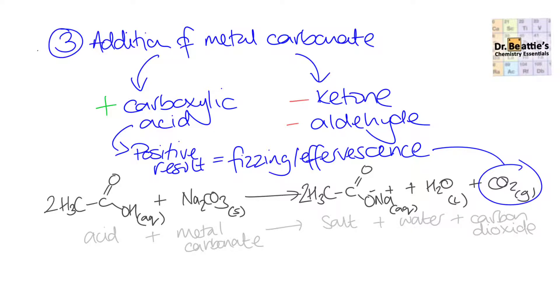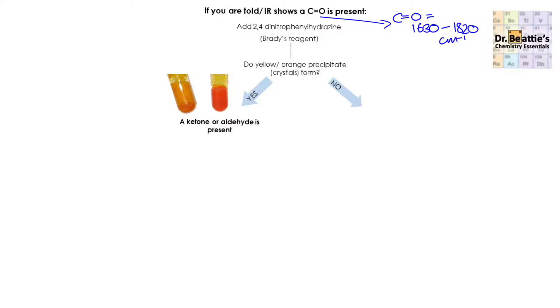That concludes our three different tests for carbonyl — C=O-containing compounds. To put these three tests in a logical order: if you're told in the question stem that you've got a carbonyl, or given information like an infrared spectrum showing a C=O present, you can distinguish exactly what carbonyl you have by doing a series of tests. First, add Brady's reagent — then ask: do yellow or orange precipitate crystals form? If yes, you know from our discussion that you've got a ketone or an aldehyde present.